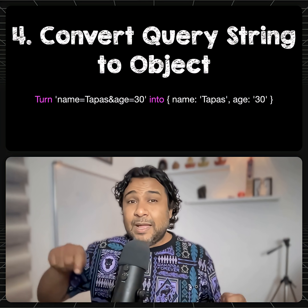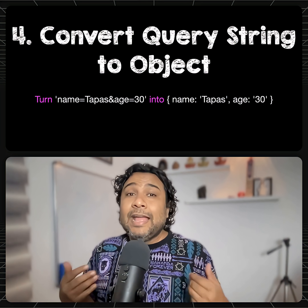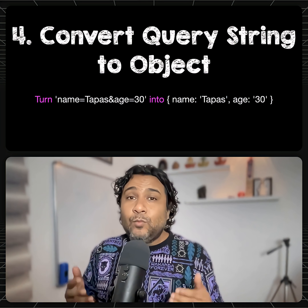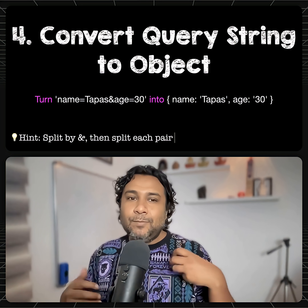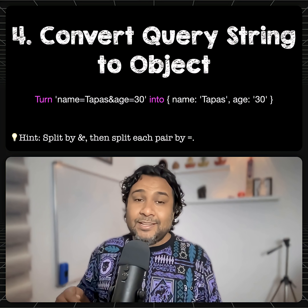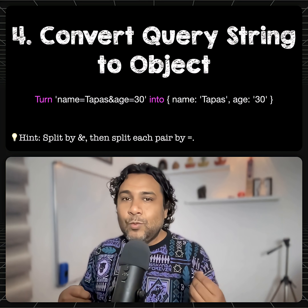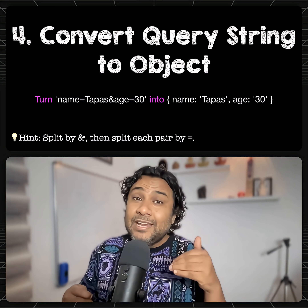The fourth challenge is about converting a query string to an object — for example, name equals Tapas ampersand age equals 30. Can you convert that to a JavaScript object? The hint is: split by ampersand, then split by equals — but you can still improvise on top of that.